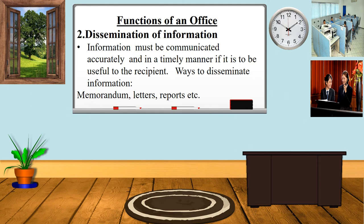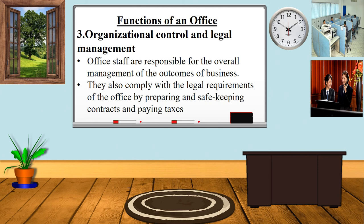Methods used to disseminate information include memoranda, letters, reports, and so on. The final function is organized and legal management. Office staff are responsible for the overall management of the office. They also comply with legal requirements by preparing and safe-keeping contracts and ensuring payment of taxes.